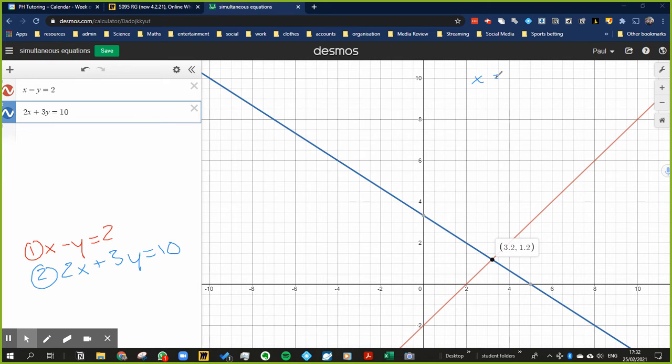Well, if we put this in, then we've got x minus y is equal to 2. Is that what happens? So 3.2 minus 1.2, yeah that does equal 2. So equation one checks out.